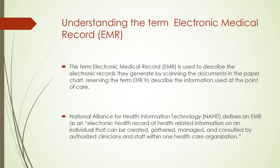The National Alliance for Health Information Technology, which actually dissolved, had a lot of health information definitions. We are using their definition so we can understand what is associated with these terms. Electronic health record, as they say, is health-related information on an individual that can be created, gathered, managed, and consulted by authorized clinicians and staff within one health care organization. So what is missing here is interoperability — something that goes across health care organizations.